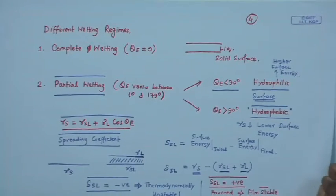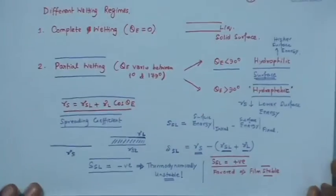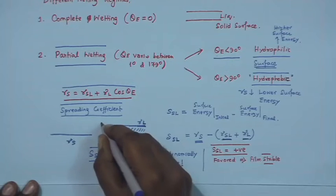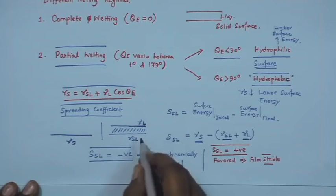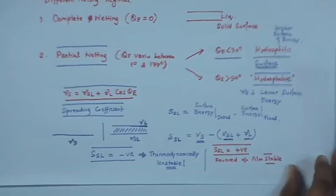Subsequently, we also understood the definition of spreading coefficient. Spreading coefficient gives us a qualitative idea about the stability of a film. A negative value implies that creating a film adds more energy to the system and is therefore unstable, whereas a positive spreading coefficient shows that film formation is favored.